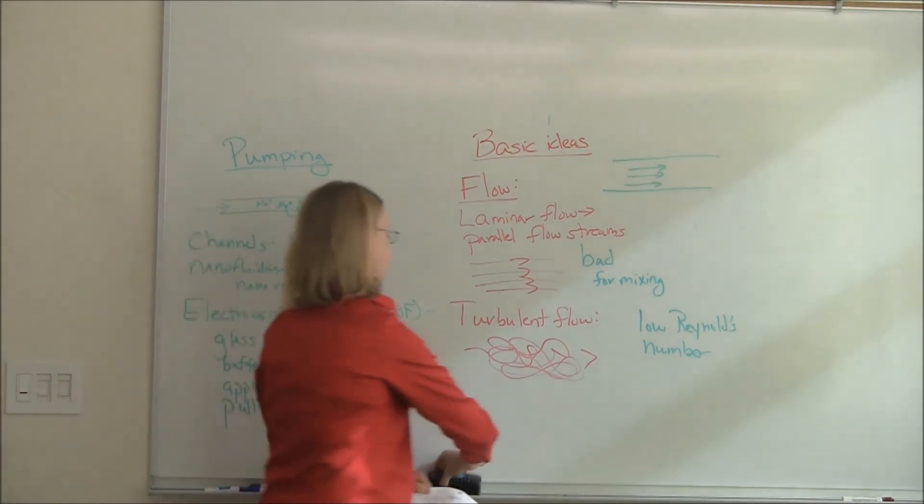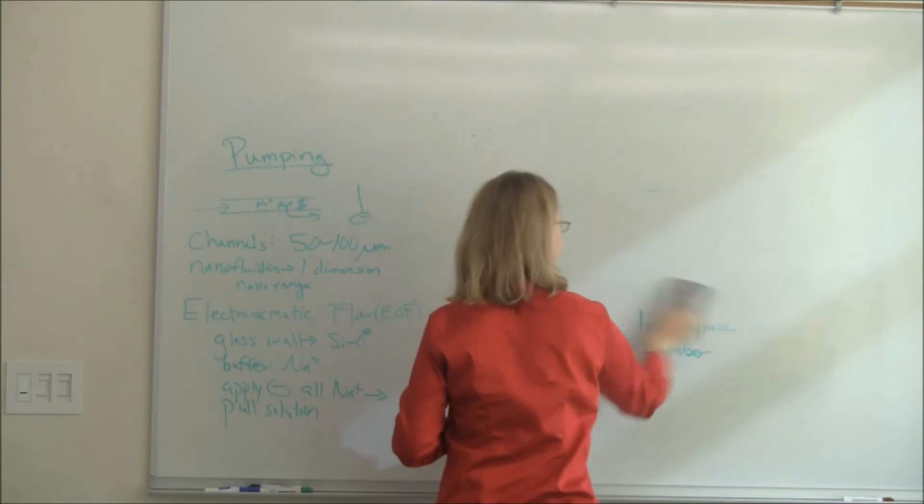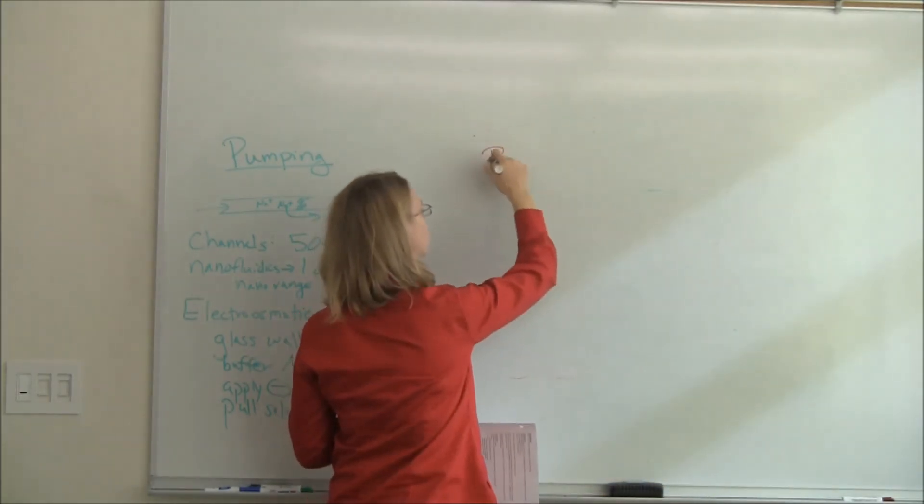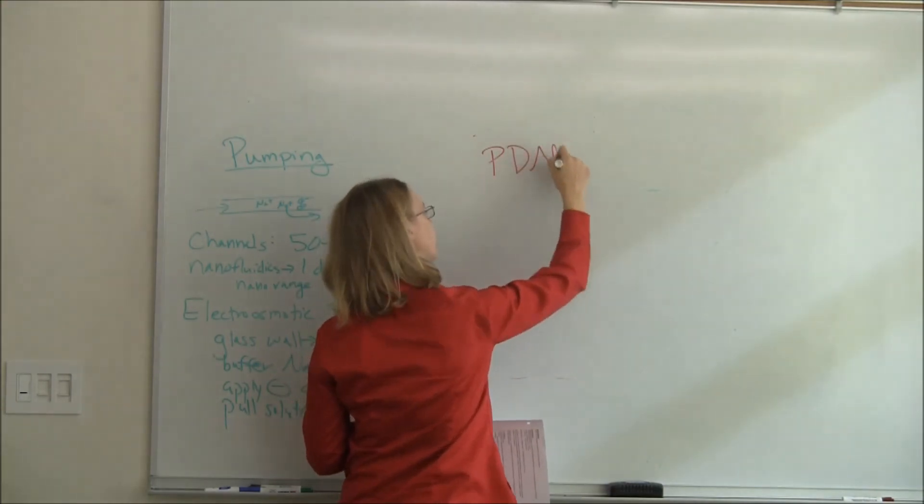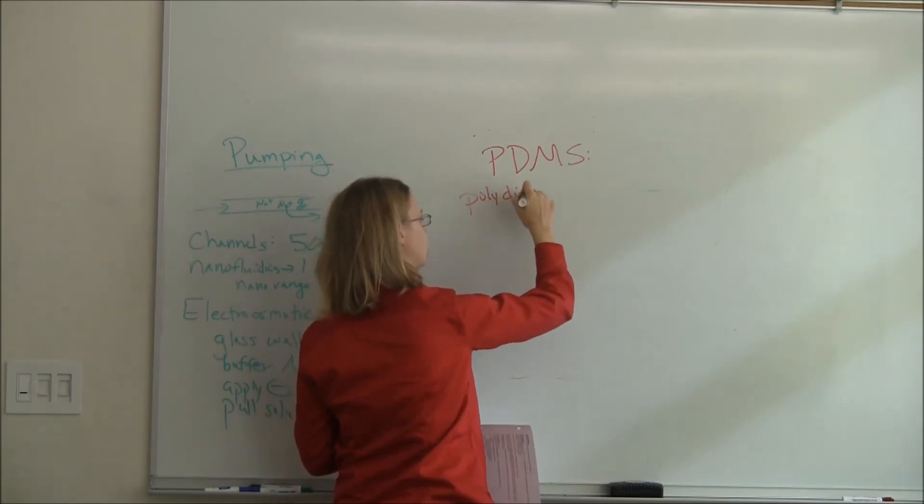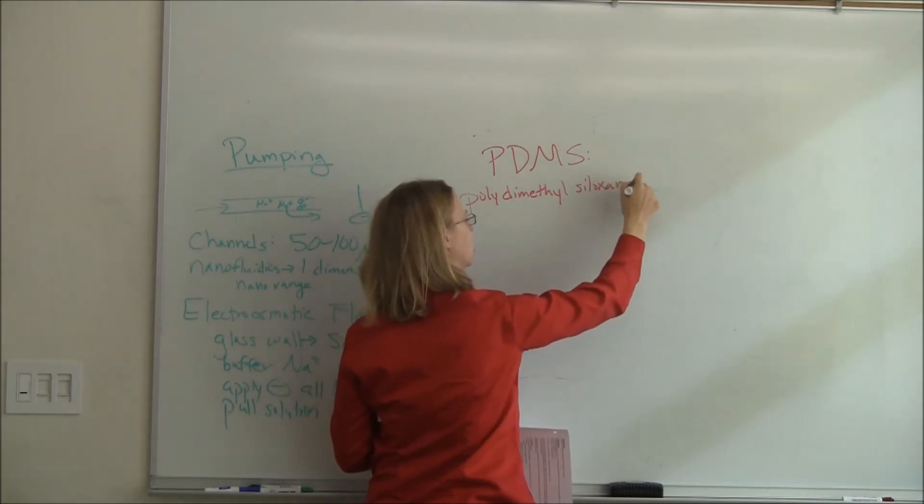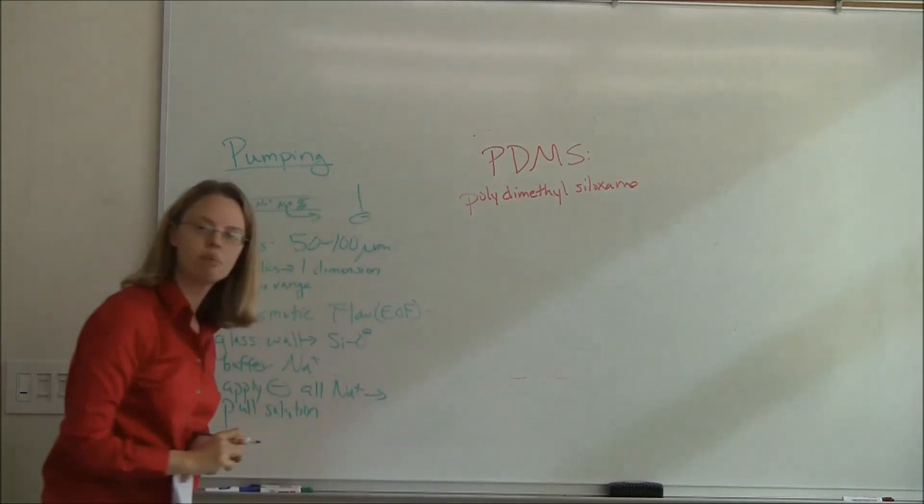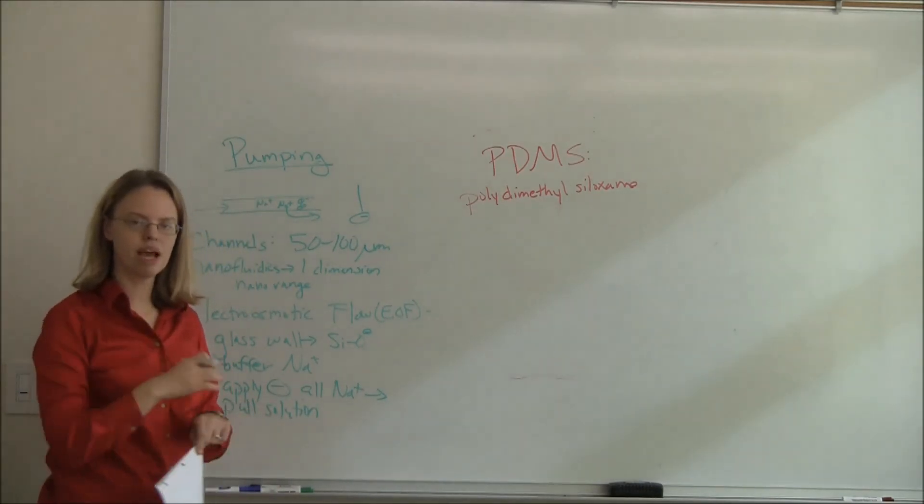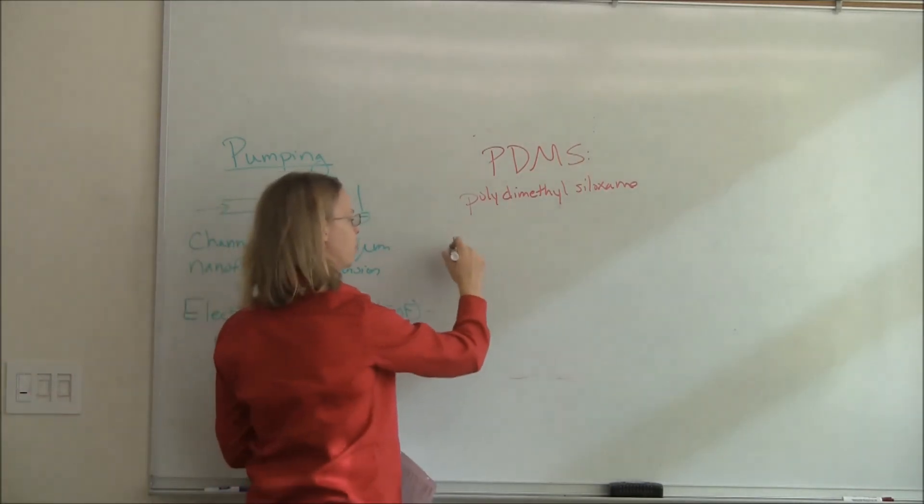Let's talk about materials for a minute. So you can make chips out of glass, or you can make them out of a polymer called PDMS, polydimethylsiloxane. It's a polymer. In the lab, we use PDMS. You have a monomer and a curing agent. You mix them together. It causes it to polymerize into nice, long chains. The only problem with this PDMS